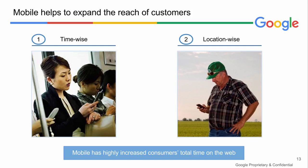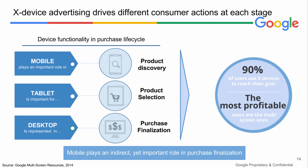Mobile helps you capture customers whenever and wherever they are — in nature, in the office, late at night, or early in the morning. Once the customer intent is announced for a product, service, or additional information, there are multiple ways to search. Some people do so on desktops, some on tablets or mobiles, but as many as 90% of users use cross-devices to search and reach their final goal.